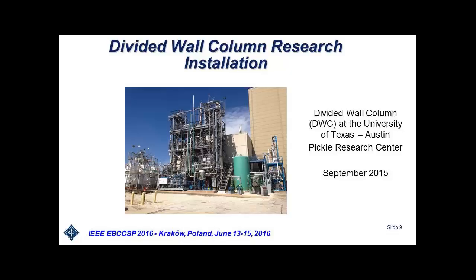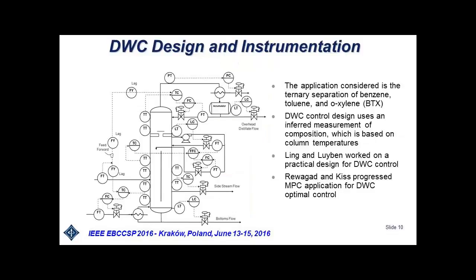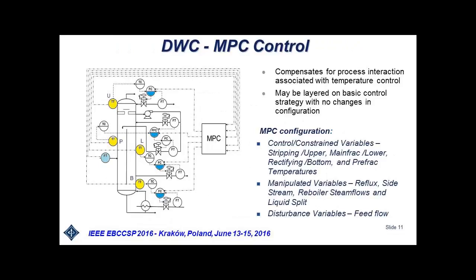Any advanced control application we do is based on traditional instrumentation and local controls. We developed this control in a standard way using cascade control. In the cascade loop, the cascade parameter becomes the controlled variable. The cascade primary loop becomes the controlled parameter for the MPC, and those are mostly temperatures. The manipulated parameters are secondary loops in cascade local control, which become manipulated variables in MPC — those are flows mostly.